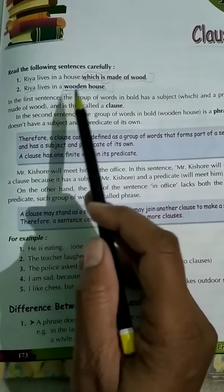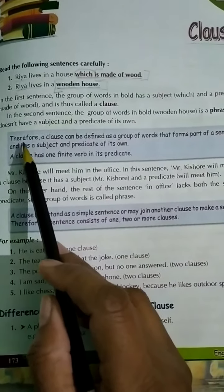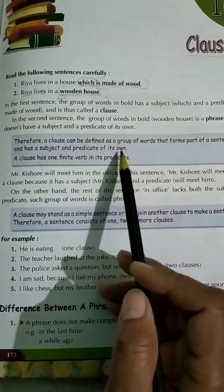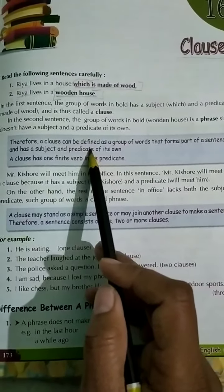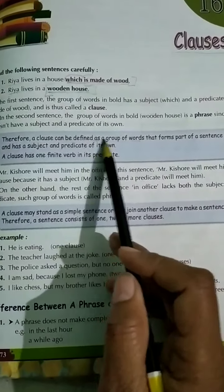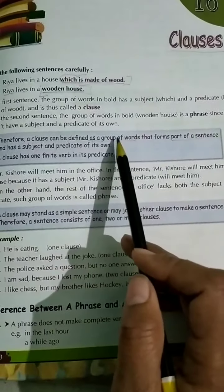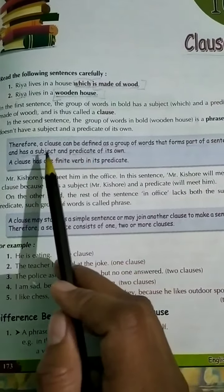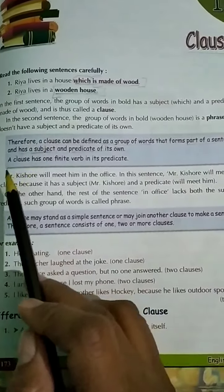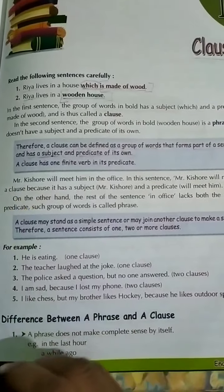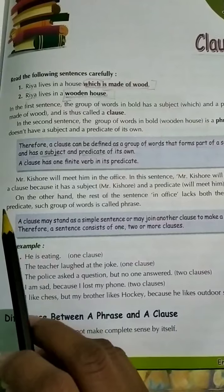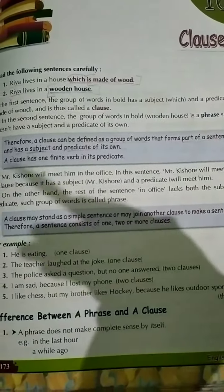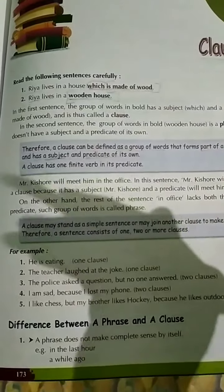So that is a phrase. What is a phrase and what is a clause? A clause can be defined as a group of words that forms part of a sentence and has a subject and predicate of its own. Every clause has the same characteristics that a sentence has.